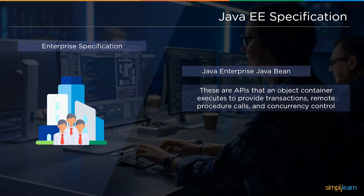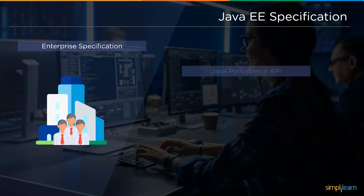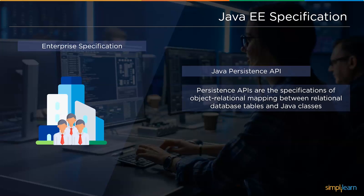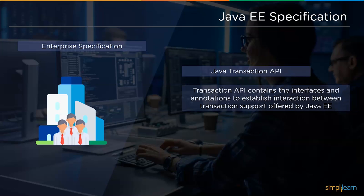Next we have Enterprise Java Bean. The Enterprise Java Bean is a set of lightweight APIs that an object container possesses in order to provide transactions, remote procedure calls, and concurrency control. Followed by Java Bean, we have Java Persistence API. The Java Persistence API covers specifications of object-relational mapping between relational database tables and Java classes.